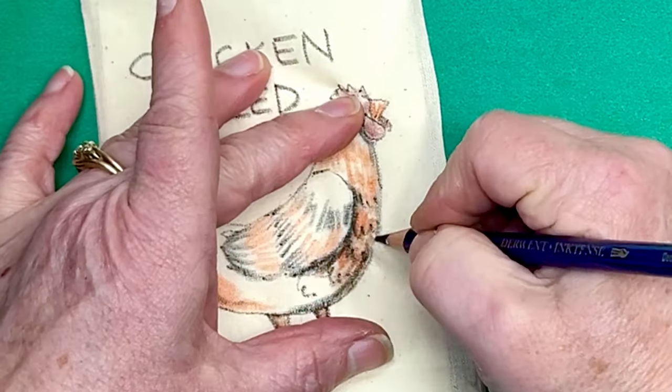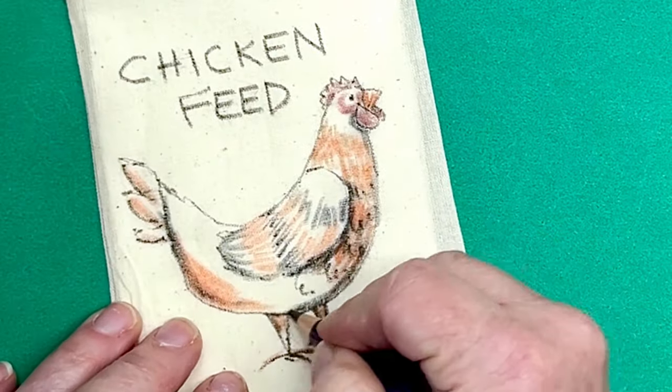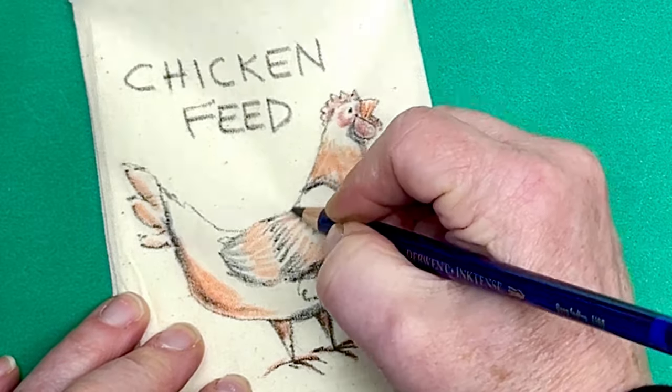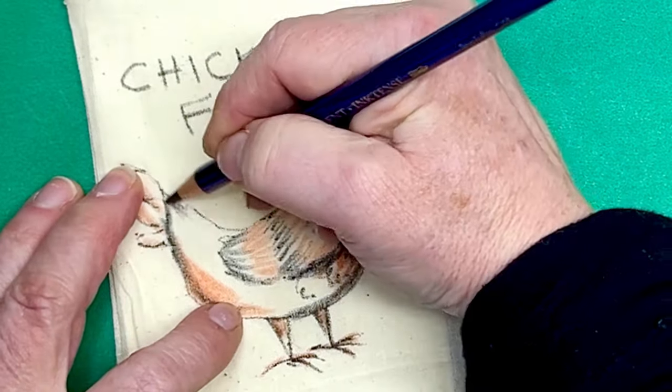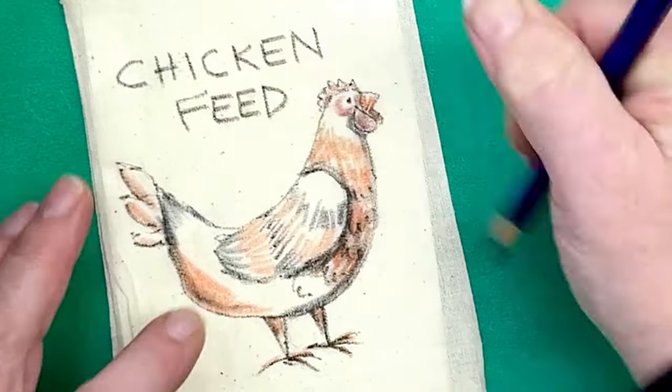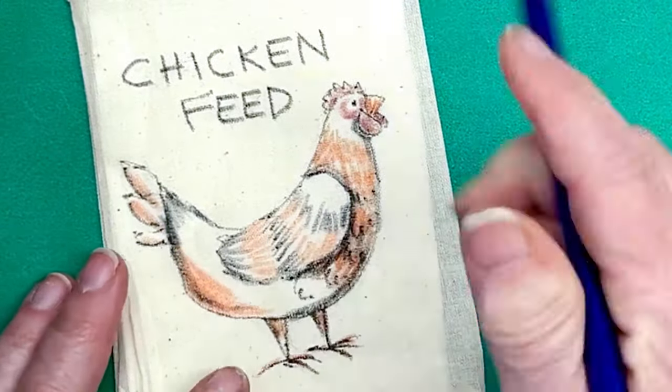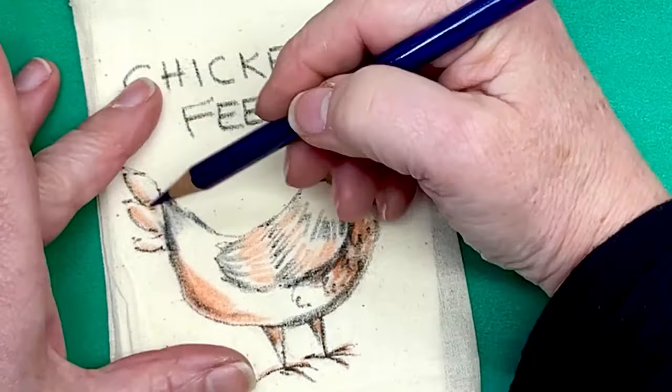Like that. A little bit around the shoulder, maybe. I'm not worried about this, like I said, being perfect. I'm going to drop a little bit of this bright blue in.